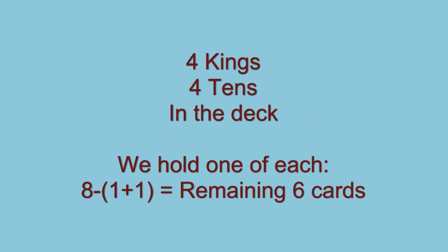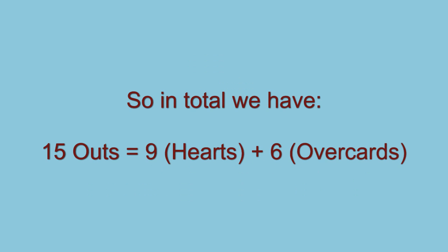There are 4 kings and 4 tens in the deck. We hold 1 of each, leaving a possible 6 cards which can assist us. So in total we have 15 outs. An out is a card in the deck we believe shall give us the winning hand should it fall.